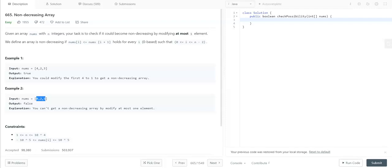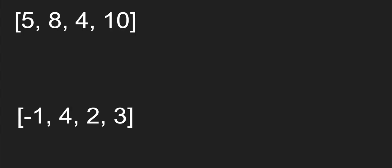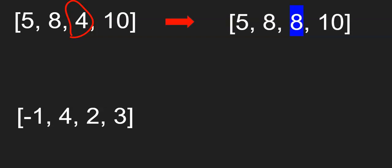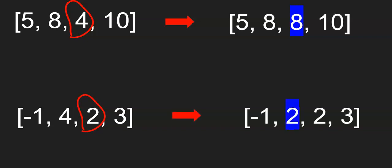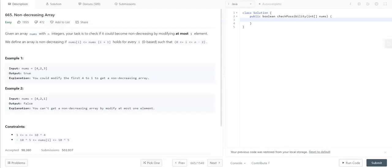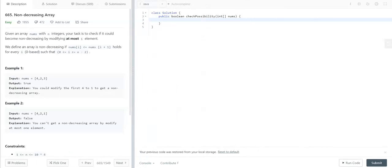To understand more on this problem let's see a few more examples. We have an array with values 5, 8, 4, 10. In this array the problematic element is the third element. We can modify this array to make it non-decreasing by replacing the third element with the second element. In the next array we have values -1, 4, 2, 3. Here also the third element is problematic, but we can make it non-decreasing by modifying the second element itself.